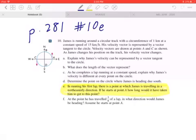In running his first lap, there's a point at which James is traveling in a north-easterly direction. If he starts at point A, how long would it have taken him to get to this point?